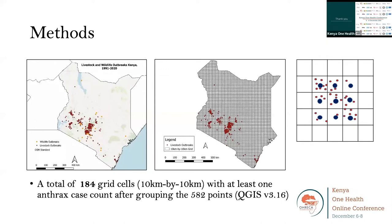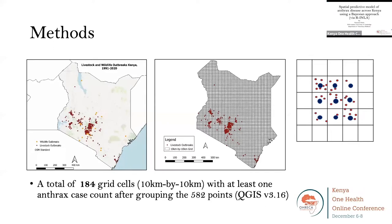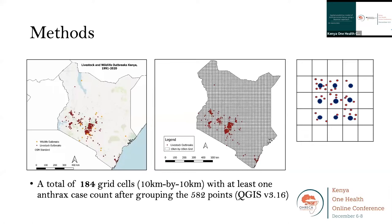The map on the extreme left shows livestock cases in red and wildlife cases in yellow. For the livestock cases, we designed a 10 km by 10 km grid cell structure and calculated the number of anthrax cases within each grid cell. We ended up with 184 grid cells of 10 km by 10 km with at least one case of anthrax, after grouping all 582 case locations. We then obtained the centroid coordinate of each grid cell, representing the case counts per location — these became our new presence locations.